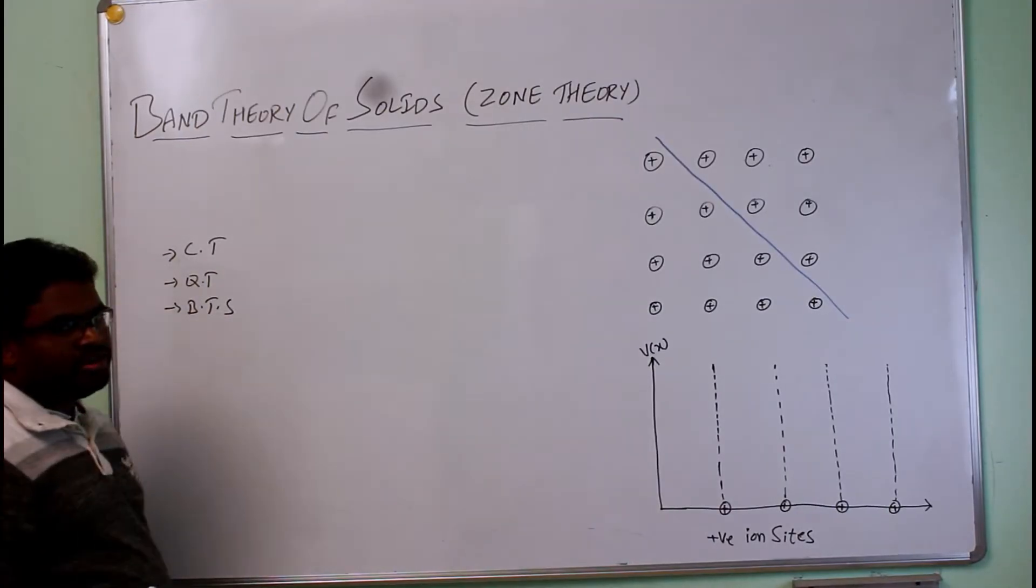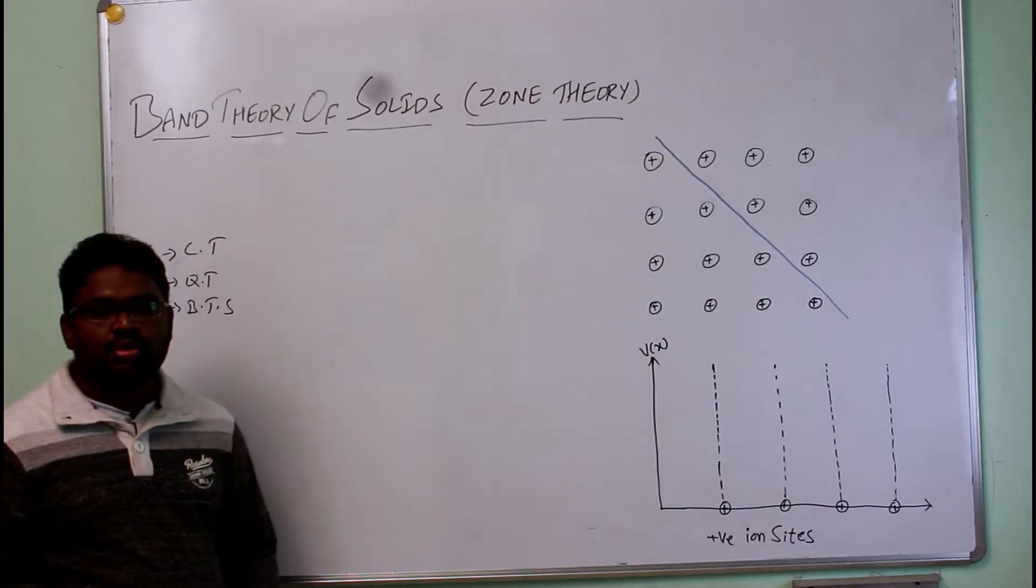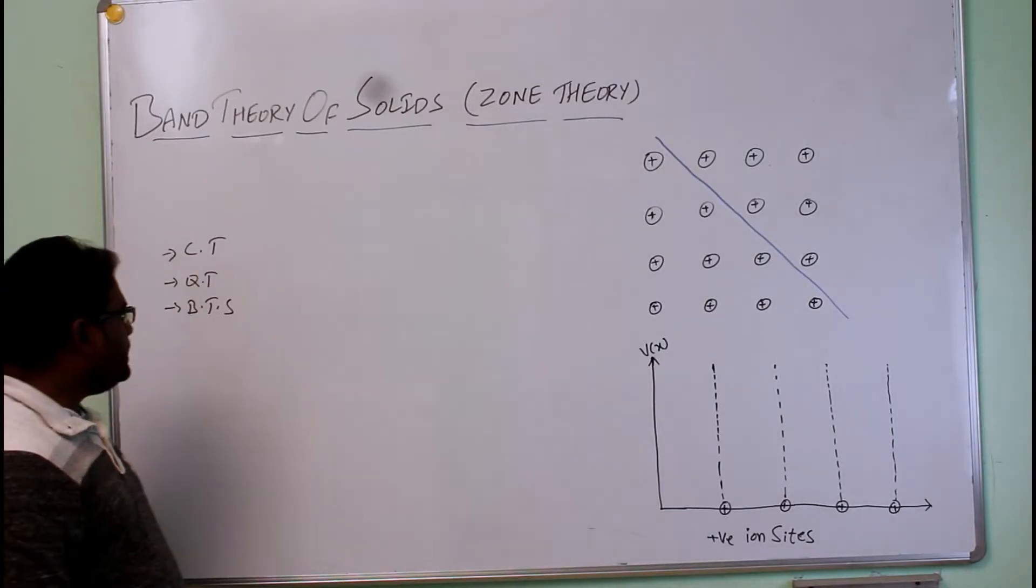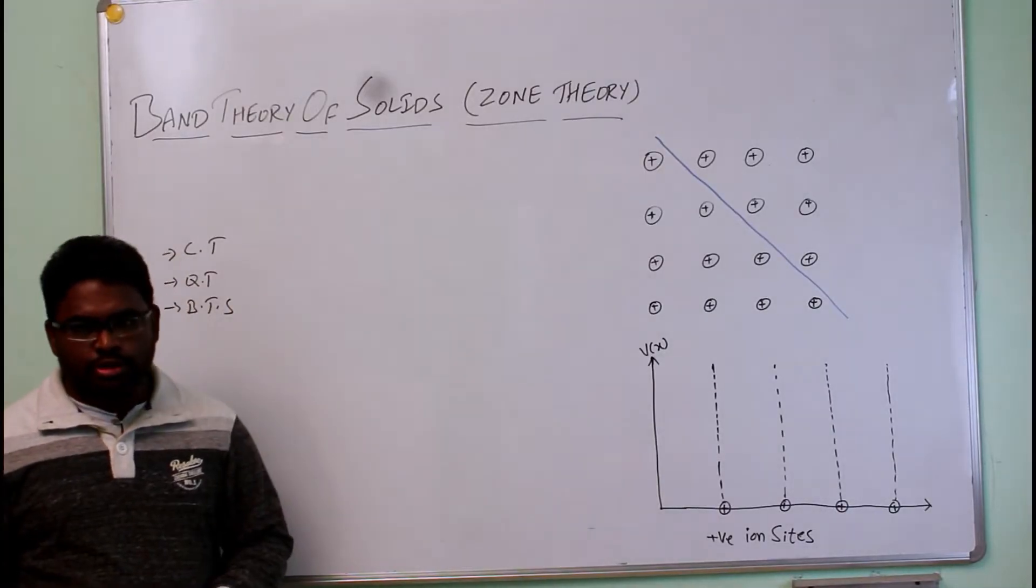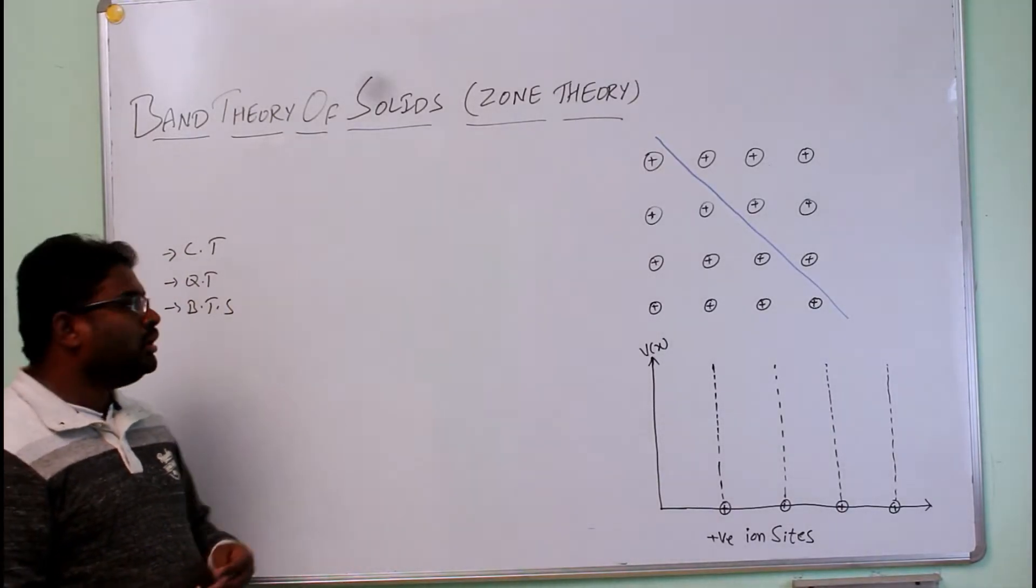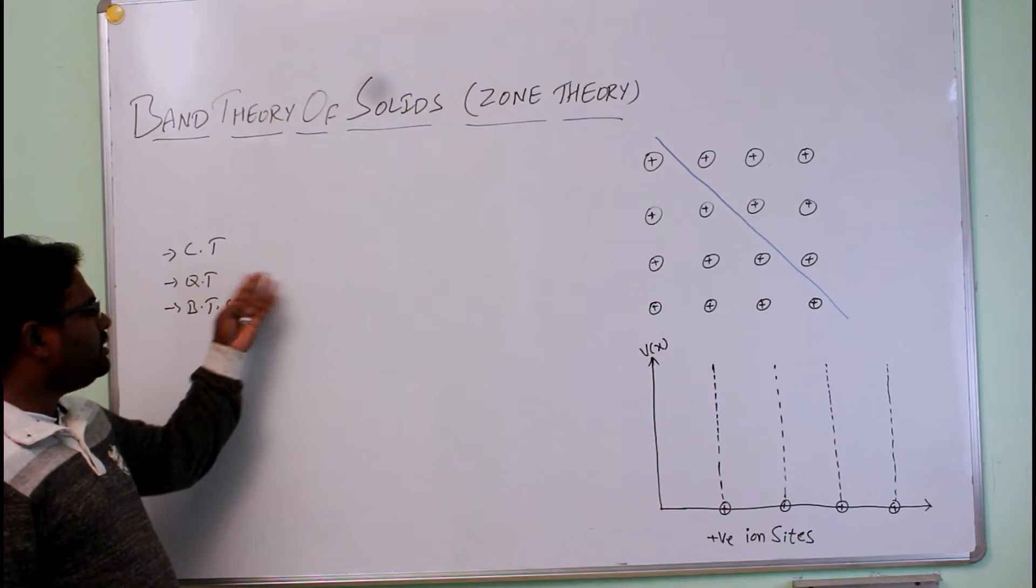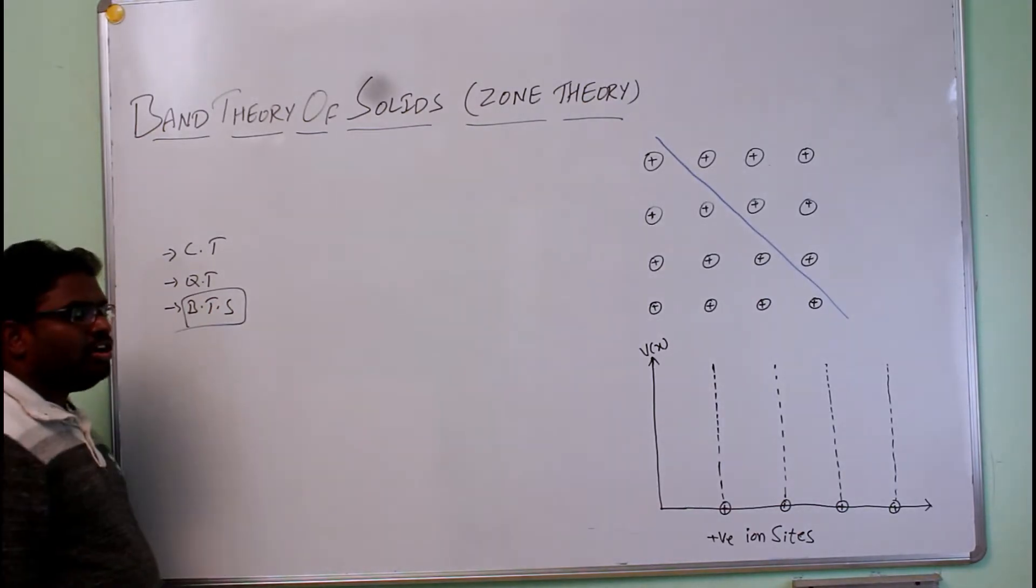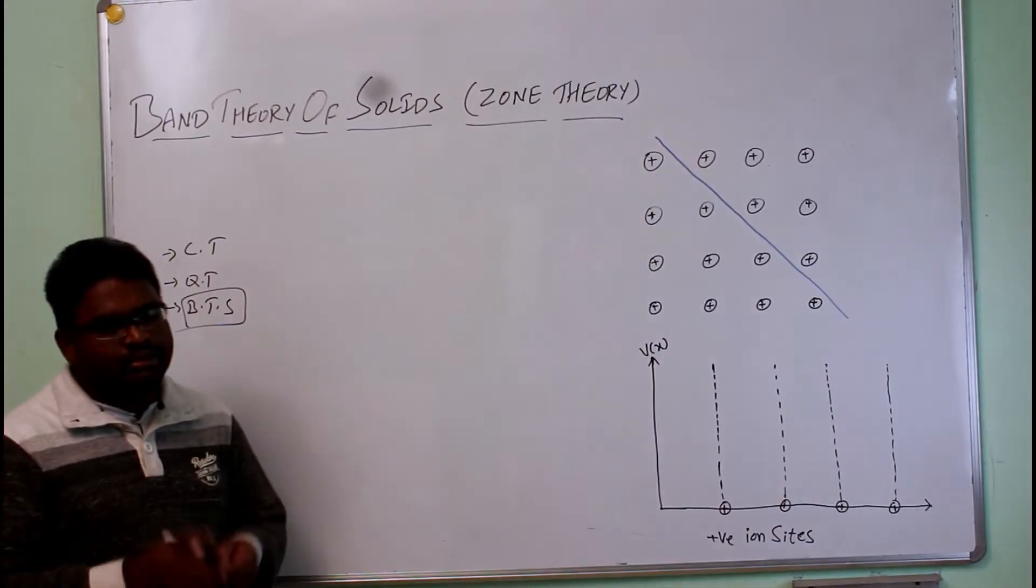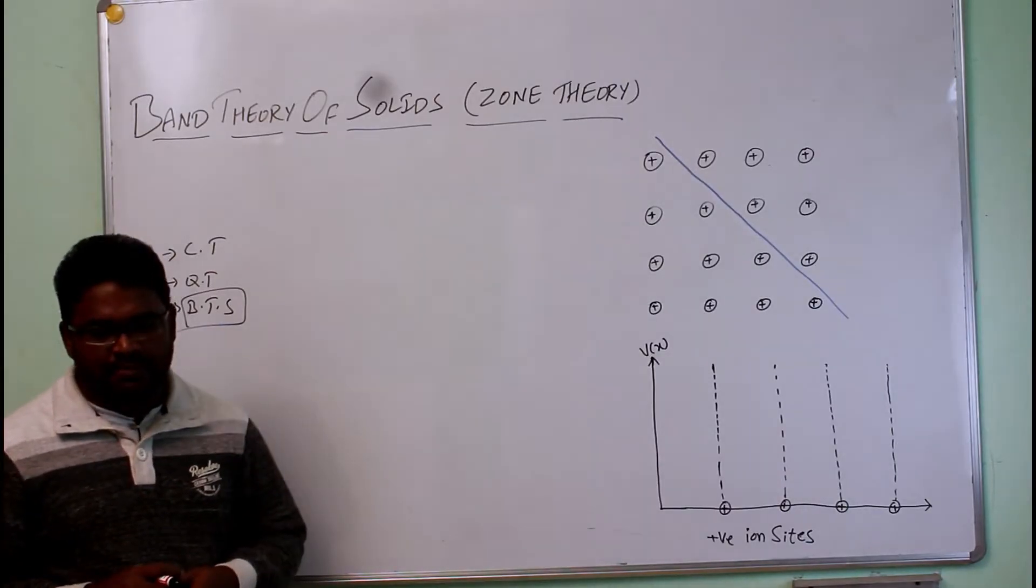Classical theory was developed by Lorentz and Drude, which is a failed model because of wrong assumptions. At the same time, the quantum theory was developed by Somerfeld, which is also a failed model because of wrong assumptions. So in order to work on their problems, scientists developed a theory called band theory of solids. Since it is a collective work, there is no particular scientist name for that.